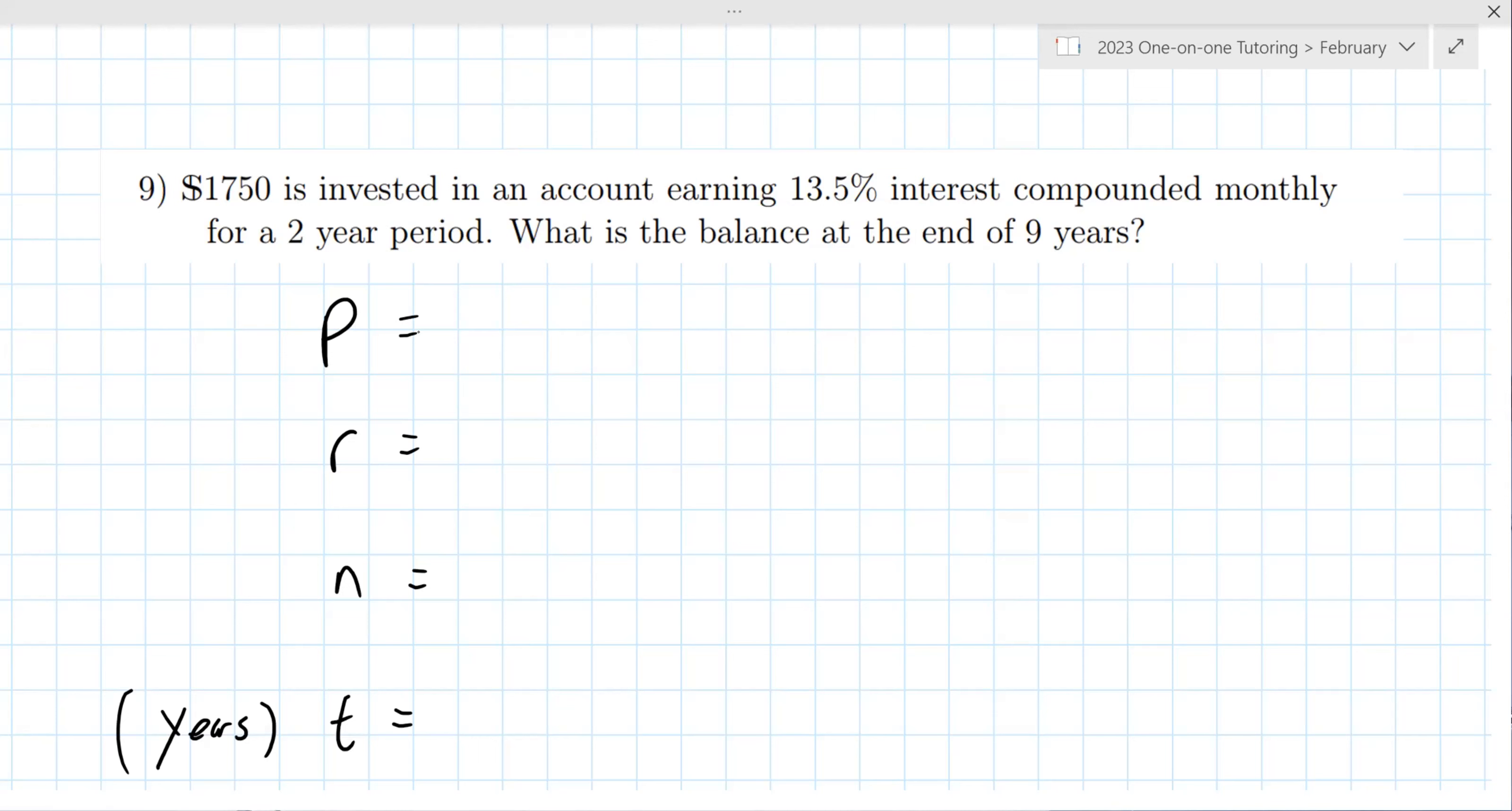Okay, so for P I got 1,750. Good. And then r I got 0.135. Good. And then n I got 12. That's right. And then t I got 9. Yes. So this one isn't quite written correctly for what you're doing, but this was perfect. Go ahead and calculate that for us, please.